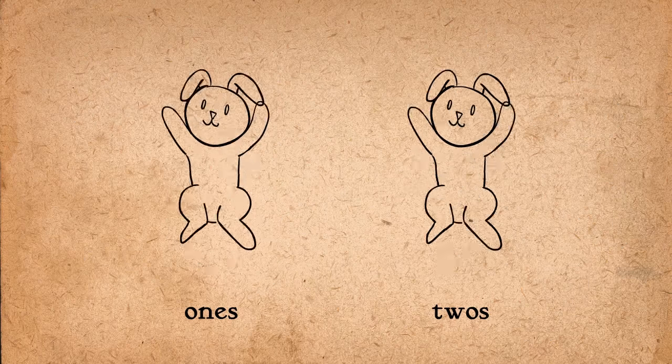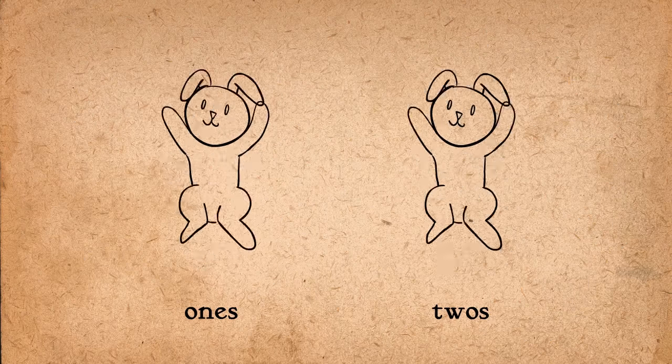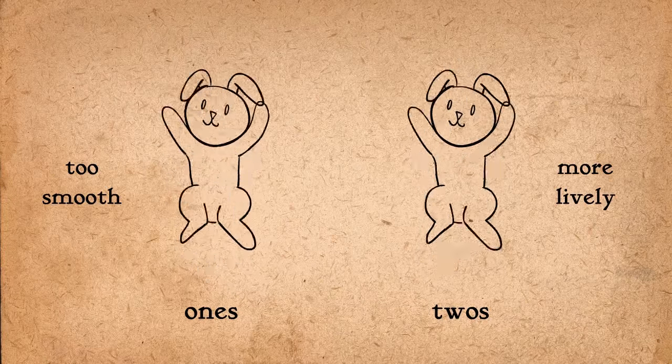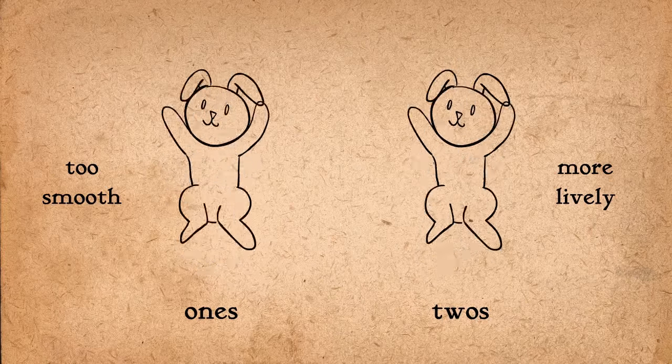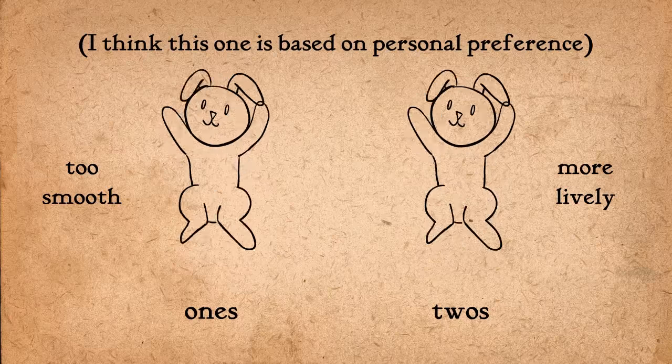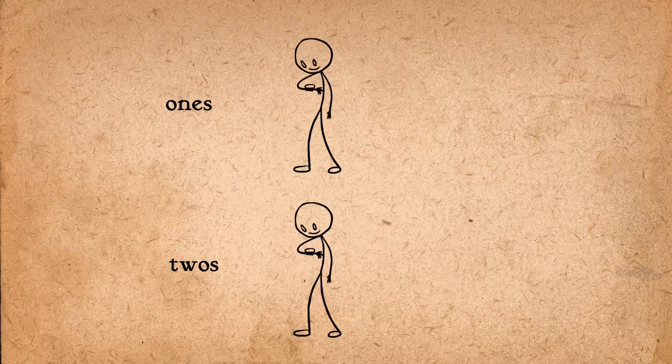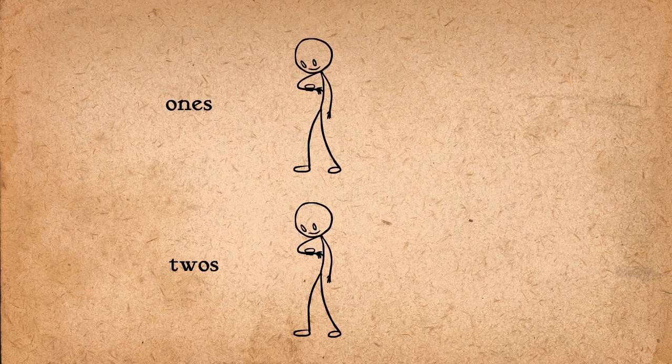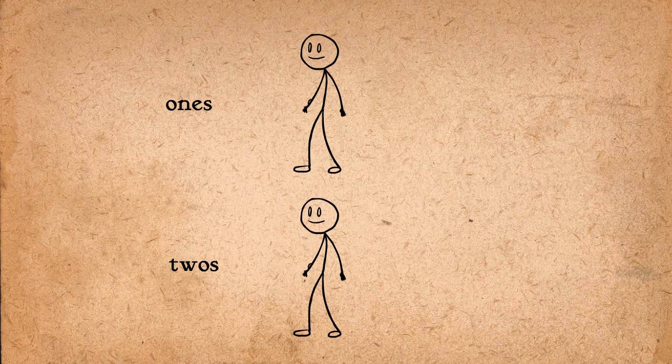Some would also say that drawing on twos is better for fast actions as well because it gives a sparkle and spirit to the animation that would otherwise be too evenly timed and less lively if it were drawn on ones. But drawing on ones is necessary when there's a very fast action that needs to be read, often a scramble or a flurry of activity.